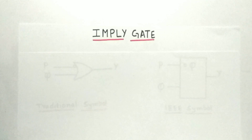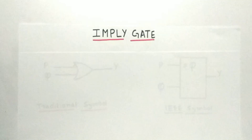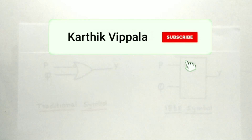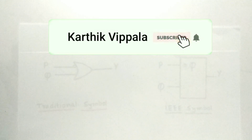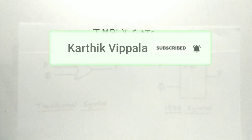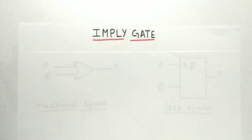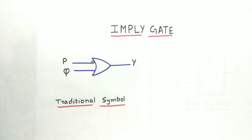Hey guys, welcome back to another interesting topic. Today's topic is on implied gate. Before going to the topic, make sure you hit that subscribe button and turn your notifications on. If you have any doubts, comment down below — I'll respond within 24 hours. So, how is an implied gate represented? It's as shown in the figure.